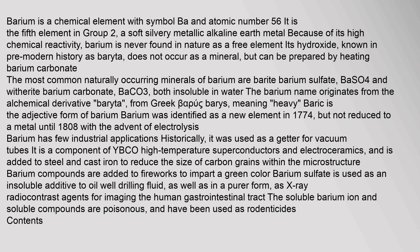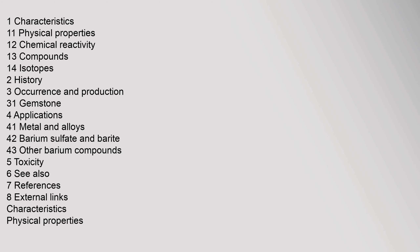Barium is a chemical element. Topics covered include: characteristics, physical properties, chemical reactivity, compounds, isotopes, history, occurrence and production, applications including metal and alloys, barium sulfate and barite, other barium compounds, toxicity, references, and external links.